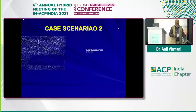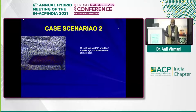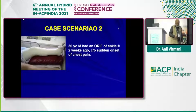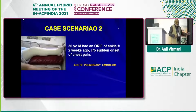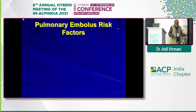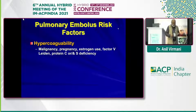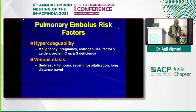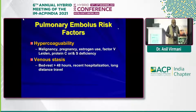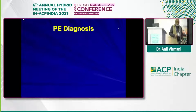Let's look at the second case. A young 30-year-old man had an open reduction internal fixation of an ankle fracture two weeks ago, and you are called to see him for sudden chest pain. This is nothing but acute pulmonary embolism. The risk factors include hypercoagulability — like pregnancy, estrogen use, mutated factor V Leiden, protein C or S deficiency — venous stasis like bed rest more than 48 hours, recent hospitalization, long-distance travel, or venous injury, leg trauma, or surgery.